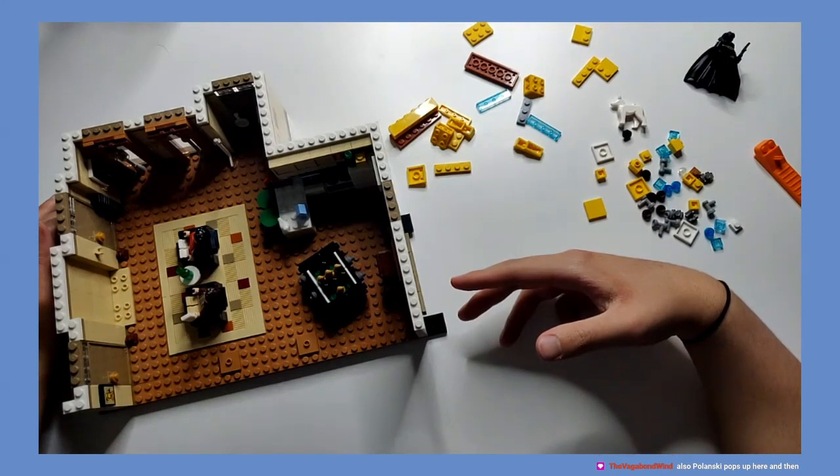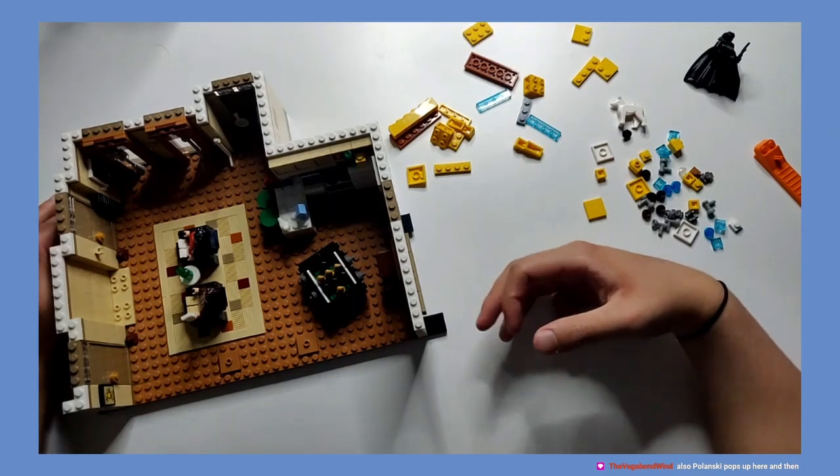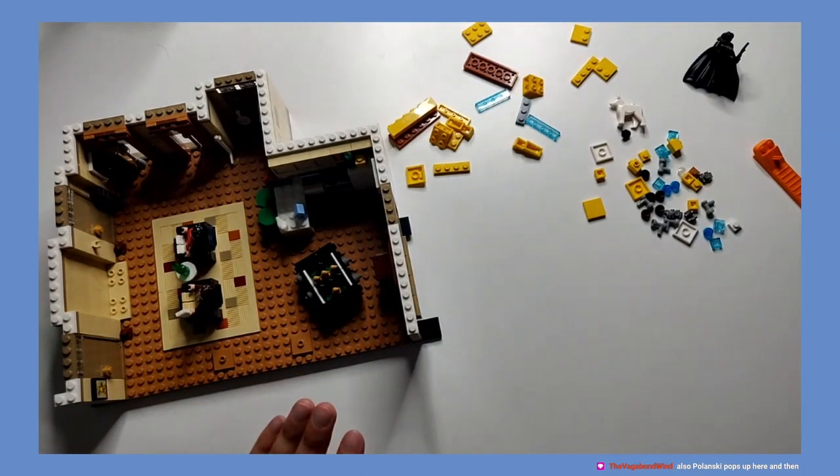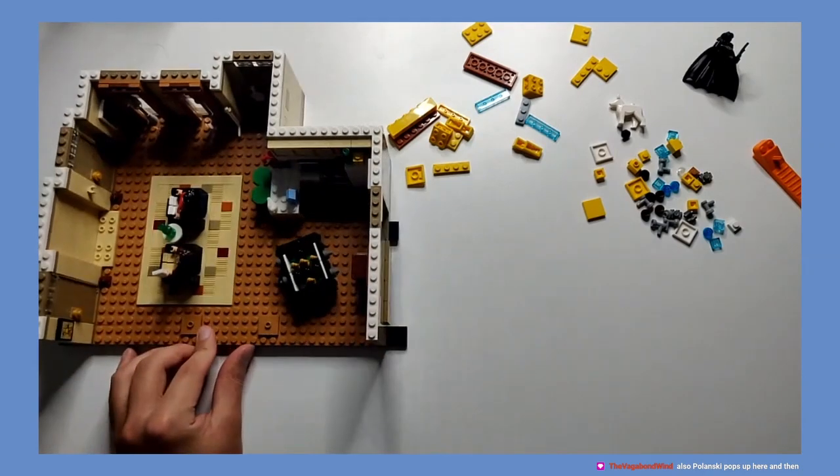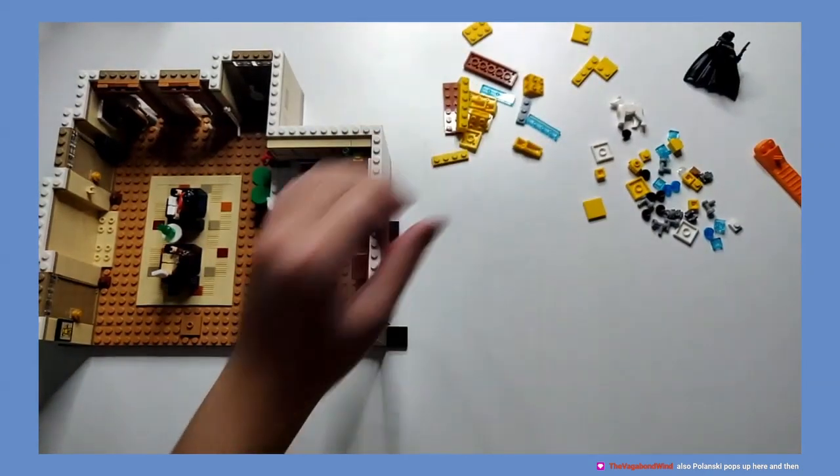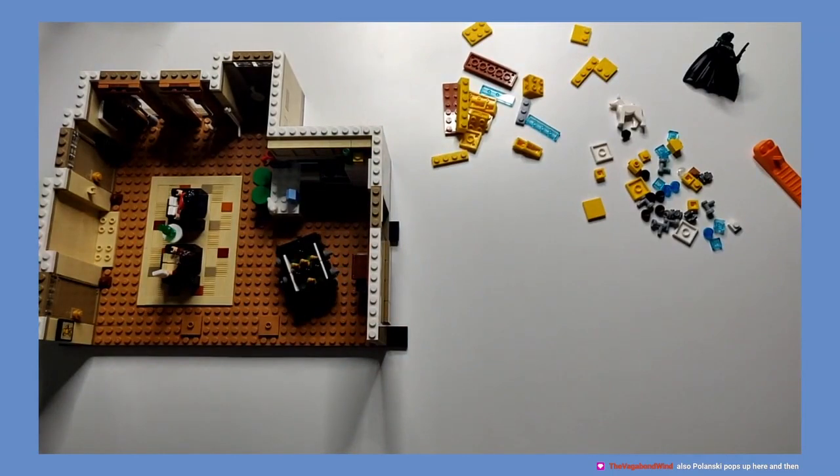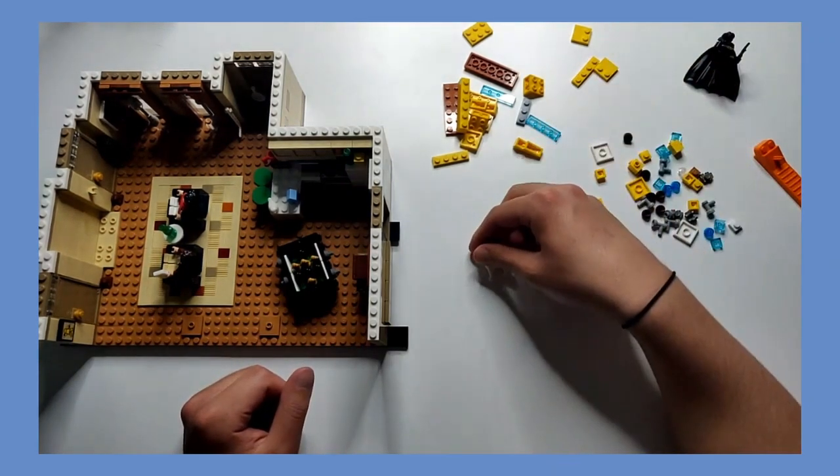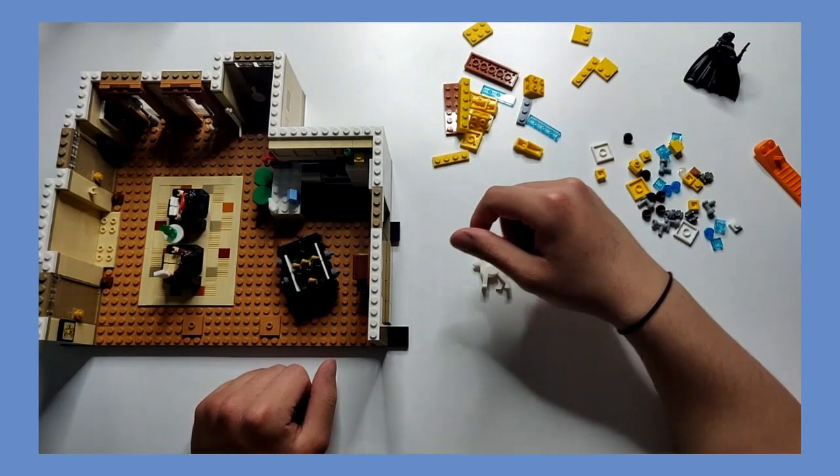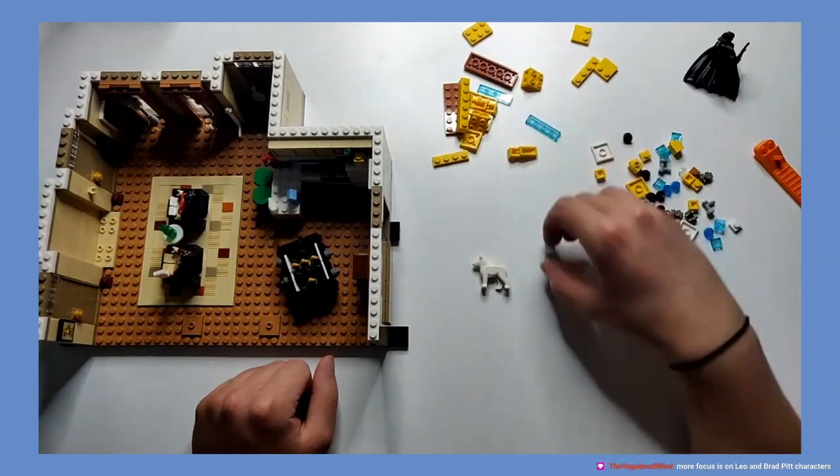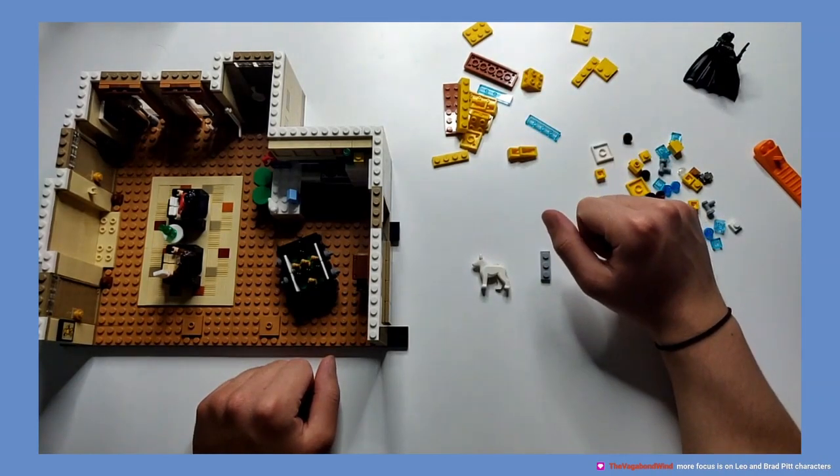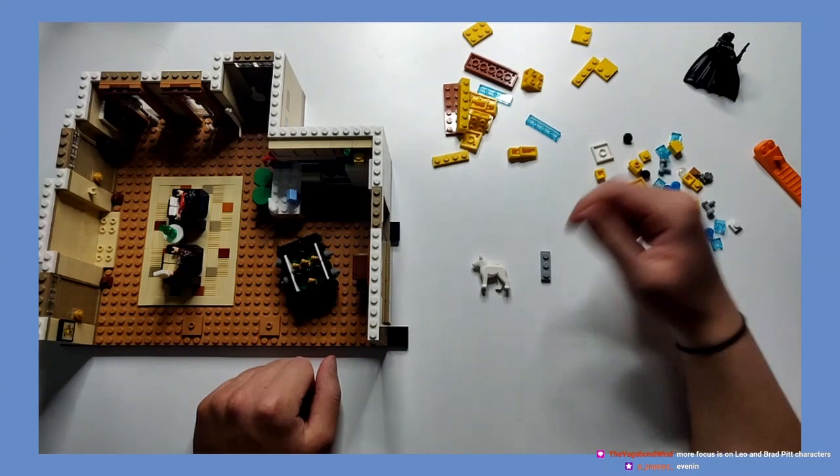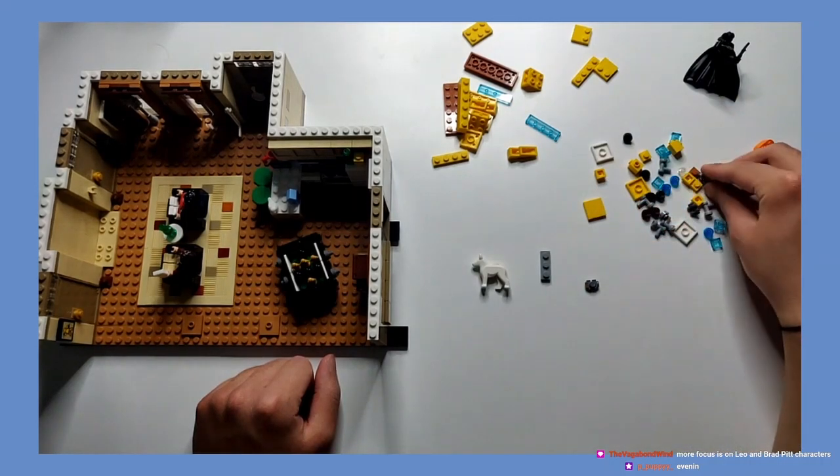Yes and no. Also Polanski pops up here and then... Yeah definitely, I would say that isn't light viewing in that case then. It's got fucking Polanski in it. Even if it is, I'm hoping even if it is Tarantino just taking the piss out of him, I'm hoping that's what it is. Otherwise that'd be a bit... The focus is more on Leo and Brad Pitt's characters, so it's just like the backdrop basically. Okay, that makes sense.